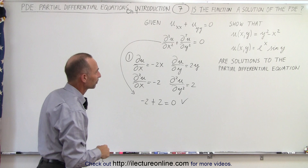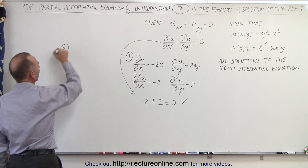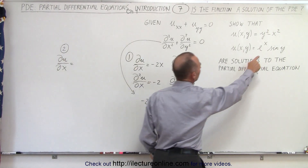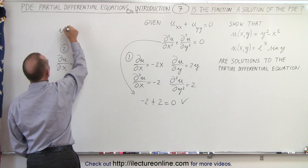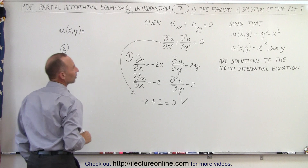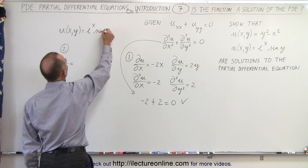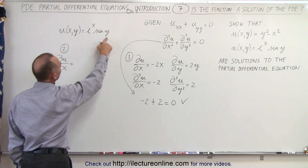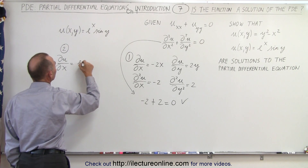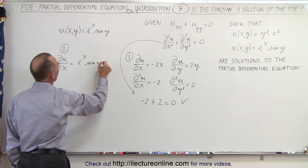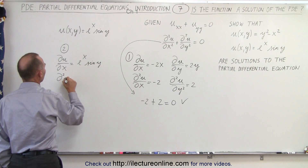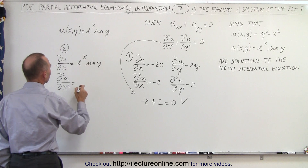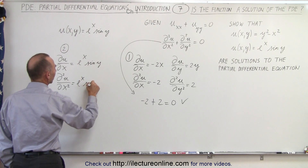Now let's try the second function. The function u depends on x and y and is written as e to the x times the sine of y. For the first partial derivative with respect to x, sine of y is a constant and the derivative of e to the x is e to the x. So we get e to the x times the sine of y. Then the second derivative of u with respect to x: again y is constant, so sine of y is constant and the derivative of e to the x is e to the x, giving us e to the x times the sine of y.